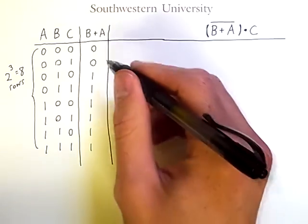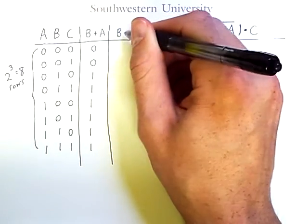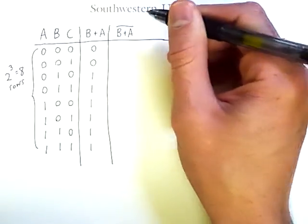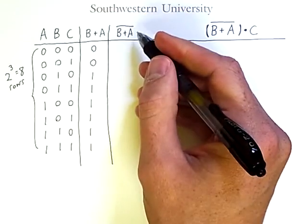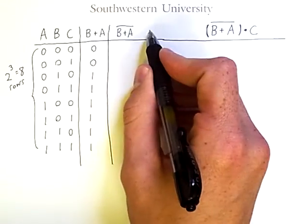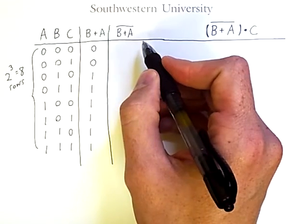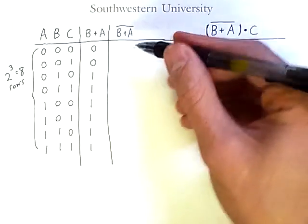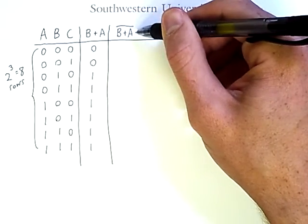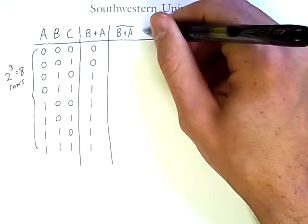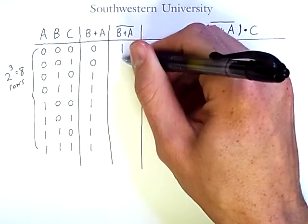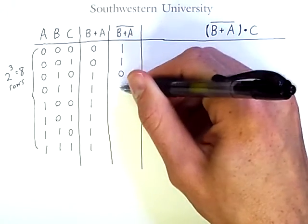Now, the next expression is B or A negated. Recall that this overbar corresponds to logical NOT, and I can put it over a whole expression to indicate the negation of that expression. And since we've already computed B or A, it's very easy to compute its negation. It's simply the opposite. So I will separate this column and just put the opposite values here.